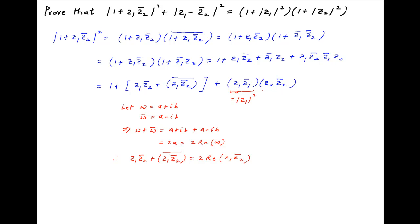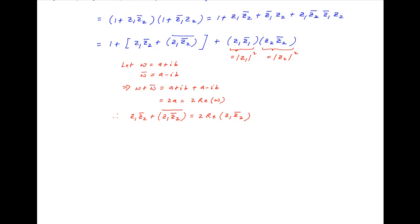Note that z1 times the conjugate of z1 equals the square of the absolute value of z1, and z2 times the conjugate of z2 equals the square of the absolute value of z2. Using these results, the square of the absolute value of 1 plus z1 times the conjugate of z2 equals 1 plus 2 times the real part of z1 times the conjugate of z2, plus the square of the absolute value of z1 times the square of the absolute value of z2. Let's call this Result 1.